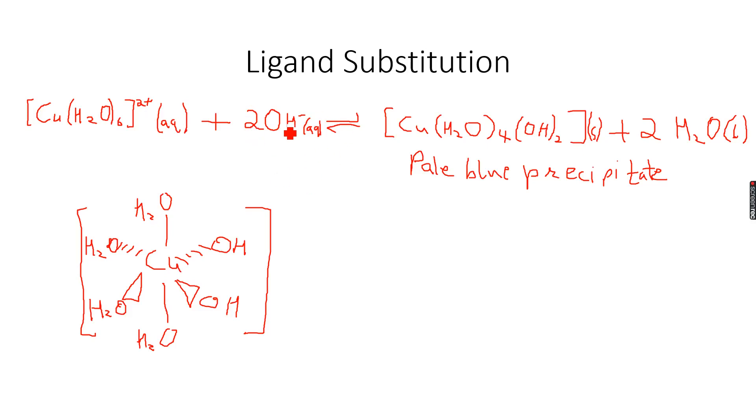This has an overall charge of two negative because each OH negative ion has a one negative charge, so we have two over here, giving an overall charge of two negative. We have no overall charge on this complex ion because two minus two is zero, so this is a precipitate.